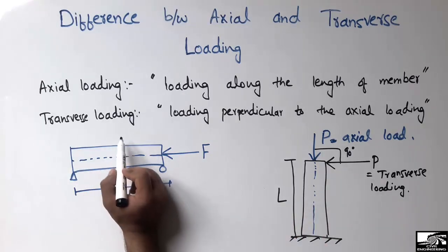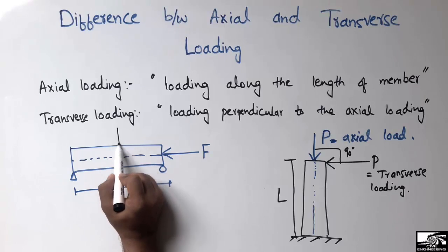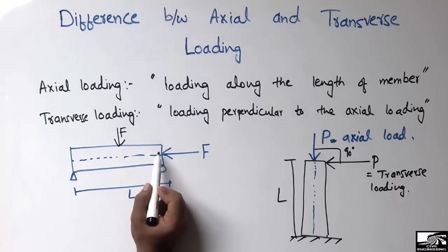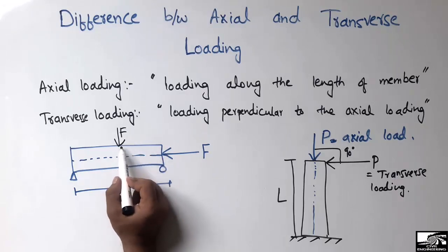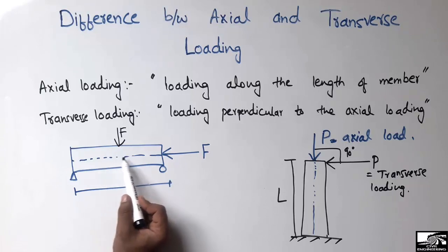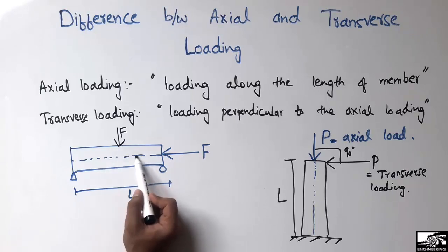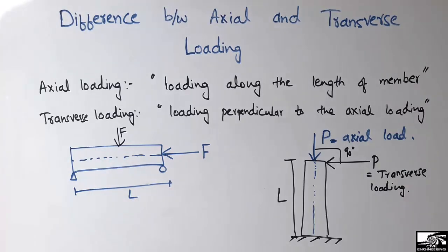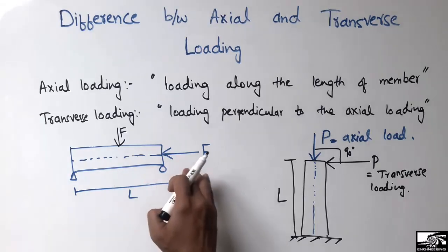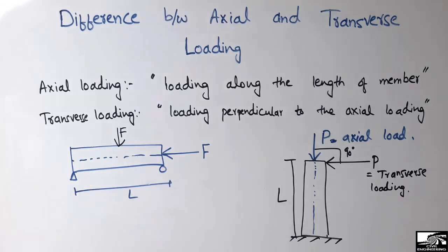In the case of a beam, the load that is perpendicular to the axial load — making an angle of 90 degrees with the axis of the beam — is called transverse loading, because it acts perpendicular to the length of the beam.